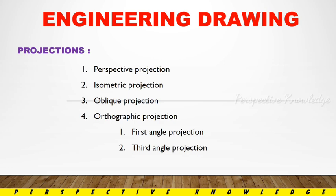In orthographic projection, there are 1st and 3rd angles — there are 2 angles of orthographic projections. In engineering drawings, we use mostly orthographic projections. In this case, we use front view, top view, and side view. We denote all the views in orthographic projections as 1st angle and 3rd angle projections.